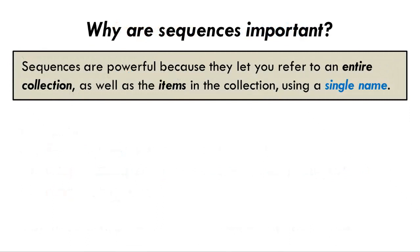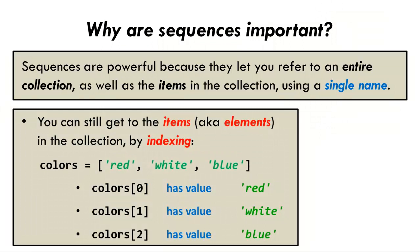Sequences are powerful because they let you refer to an entire collection, as well as the items in the collection, using a single name. For example, here the variable colors refers to a collection of three strings that represent colors.